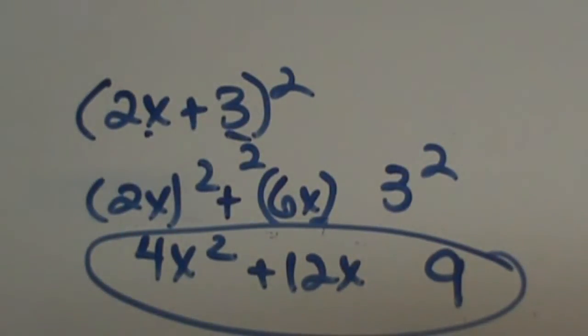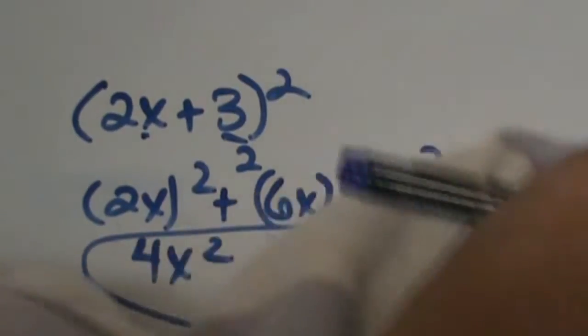Multiply the first, multiply the last, multiply and double for the middle. Let's try a couple of these. Let's look at number 2 on your note taking guide.